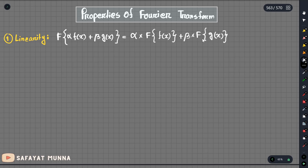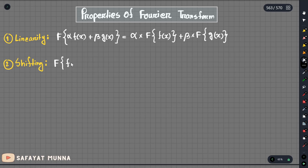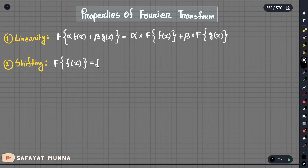This is fairly easy to understand. We need to know the shifting property of the Fourier transform. We have a connected function in the Fourier transform — suppose our function f(x) has a Fourier transform.